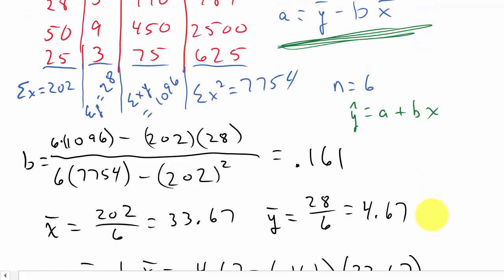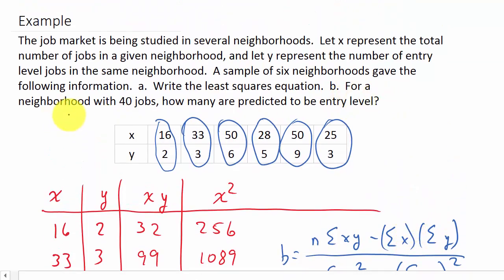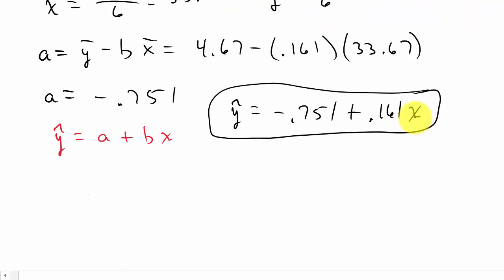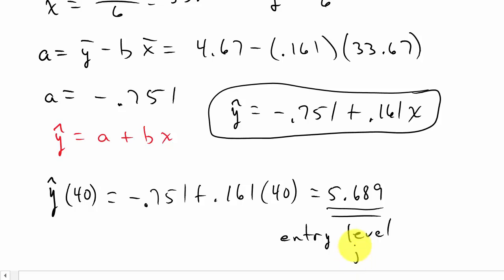What they want us to do in the second part of the problem is for a neighborhood with 40 jobs, how many are predicted to be entry level? The 40 is our x value, so we can just take 40 and plug it into here. Y hat evaluated at 40—I'm plugging 40 in for x—is negative 0.751 plus 0.161 times 40. We get about 5.689 entry level jobs.